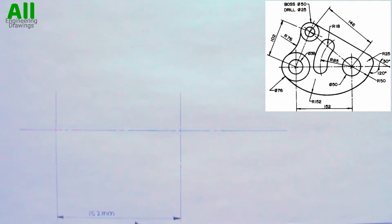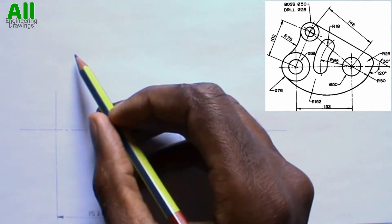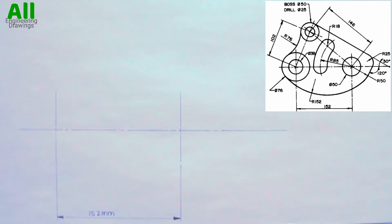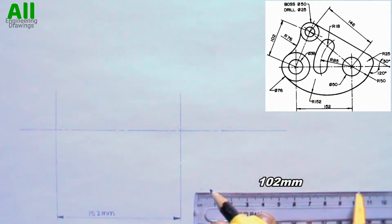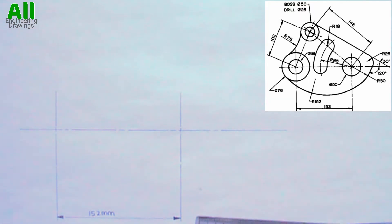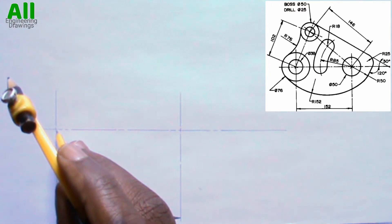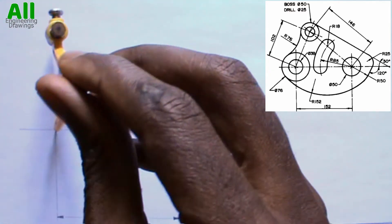From the question, the distance between this point and the center of the circle here is 102 mm. So I will adjust my compass to a radius of 102 mm. After that, I will place my compass on this point, then cut an arc this way.